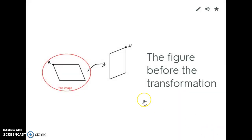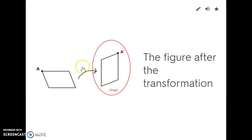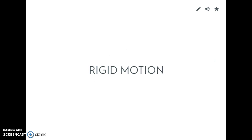When we have transformations, we have something called a pre-image. The pre-image is the image before the transformation occurs. If you notice this parallelogram here, this is the parallelogram before — this is the pre-image. Then it gets turned and becomes the new image. My pre-image has the capital A, and my new image has A prime — A apostrophe. The image is the after, so A was the pre-image and now A prime is the image after the transformation occurs.